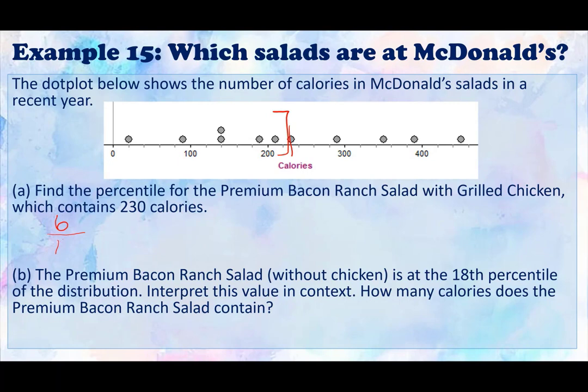So we have six divided by 11, which is going to give us roughly 55 percent. So what does this mean? This means that the premium bacon ranch salad with grilled chicken is at the 55th percentile.